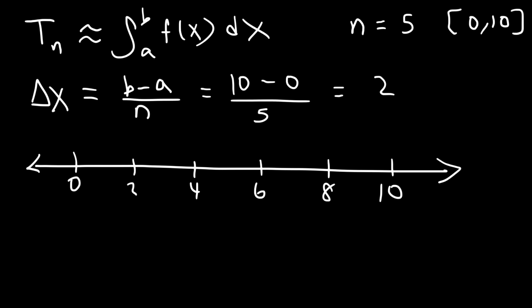You may have seen earlier videos on Riemann sums covering left endpoints, right endpoints, and midpoint rule. To recap: using the left endpoint for a Riemann sums problem with n equal to 5, you choose five out of the six points on the number line. For the left endpoint rule you'd use 0, 2, 4, 6, and 8. For the right endpoint rule you'd use the other five points. You're always going to use five out of six points whether you're using the left endpoint, right endpoint, or midpoint rule.